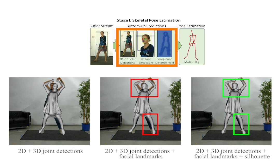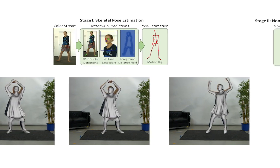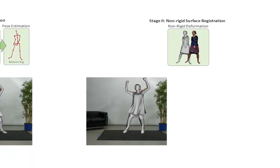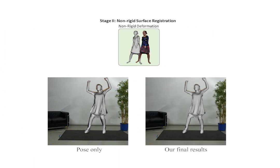However, the skeleton-driven surface does not accurately match the input images, since the non-rigid deformation of skin and clothes cannot be modeled by skeletal motion.